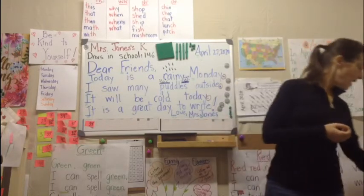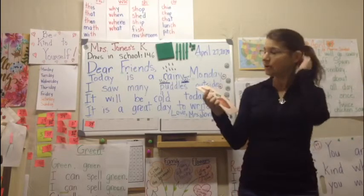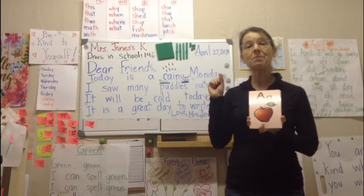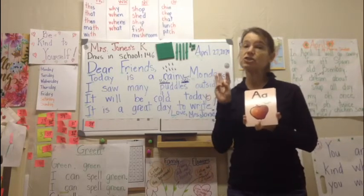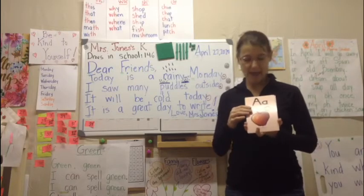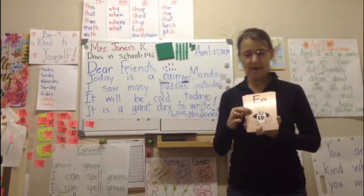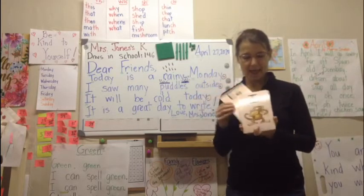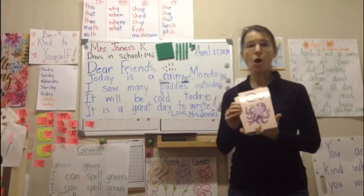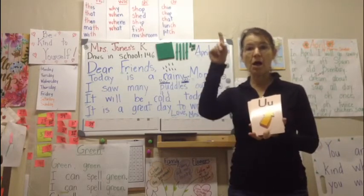Right now I wanted to do some vowel review. We're going to look at our short vowels and just review them. These are the ones that are in the middle of words that are often just three letters. We've got: A — apple, E — ed, I — itch, O — octopus, U — up.